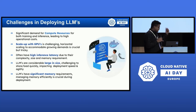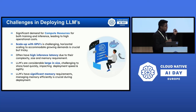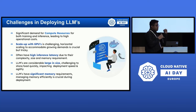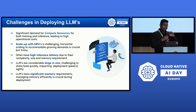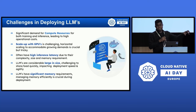The potential challenges are around the computational resources required, both for training and inference. It leads to high inference cost and high infrastructure cost for managing. Scaling up with GPUs is hard, while scaling up with CPUs is easier because it's easier to get hold of those machines versus the GPU instances.